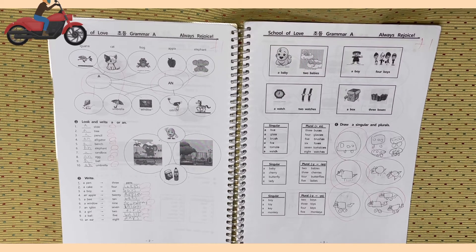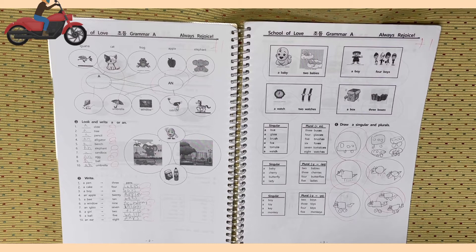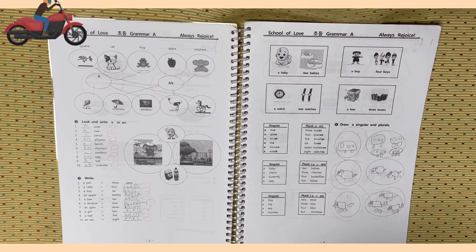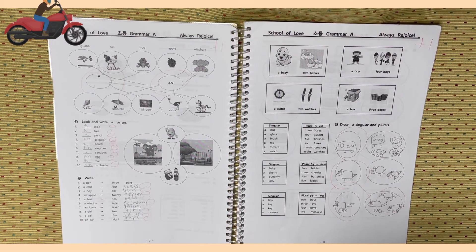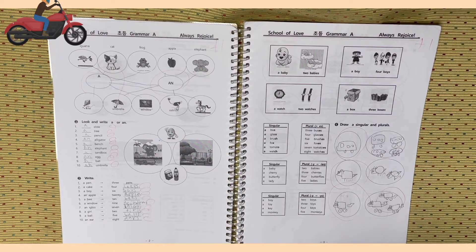Page 3. A baby, two babies. A boy, four boys. A watch, two watches. A box, three boxes. 몇몇 규칙들이 있습니다. 단어의 끝이 S, S, H, X, O, CH로 끝나면 단어 뒤에 ES를 붙여줍니다. 단어가 자음과 Y로 끝나면 I, E, S로 바꿔줍니다. 단어가 모음과 Y로 끝나면 그냥 S만 붙여줍니다.